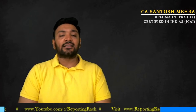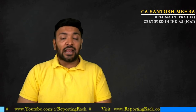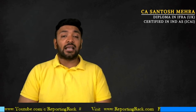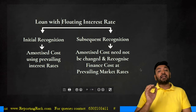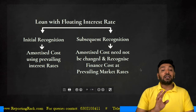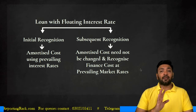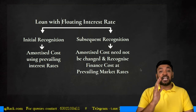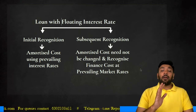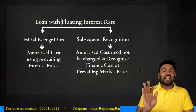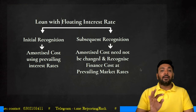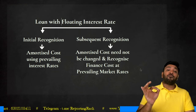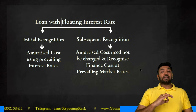But the interest cost will have to change. Yes — the interest cost in your P&L will only be recognized to the extent of the floating interest rate. Whenever you take a loan using a floating interest rate, initial recognition should be at amortized cost using the prevailing interest rate. But for subsequent recognition, if there is a change in the floating rate, the amortized cost should not be changed. Recognize the finance cost using the prevailing market rate, but your amortized cost calculation should still follow the same initial interest rate computation.